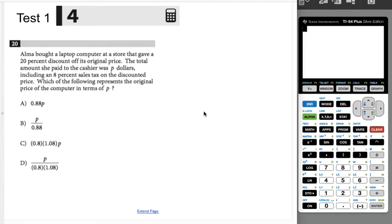Alma bought a laptop computer at a store that gave a 20% discount off its original price. The total amount she paid to the cashier was P dollars, including an 8% sales tax on the discounted price. Which of the following represents the original price of the computer in terms of P?